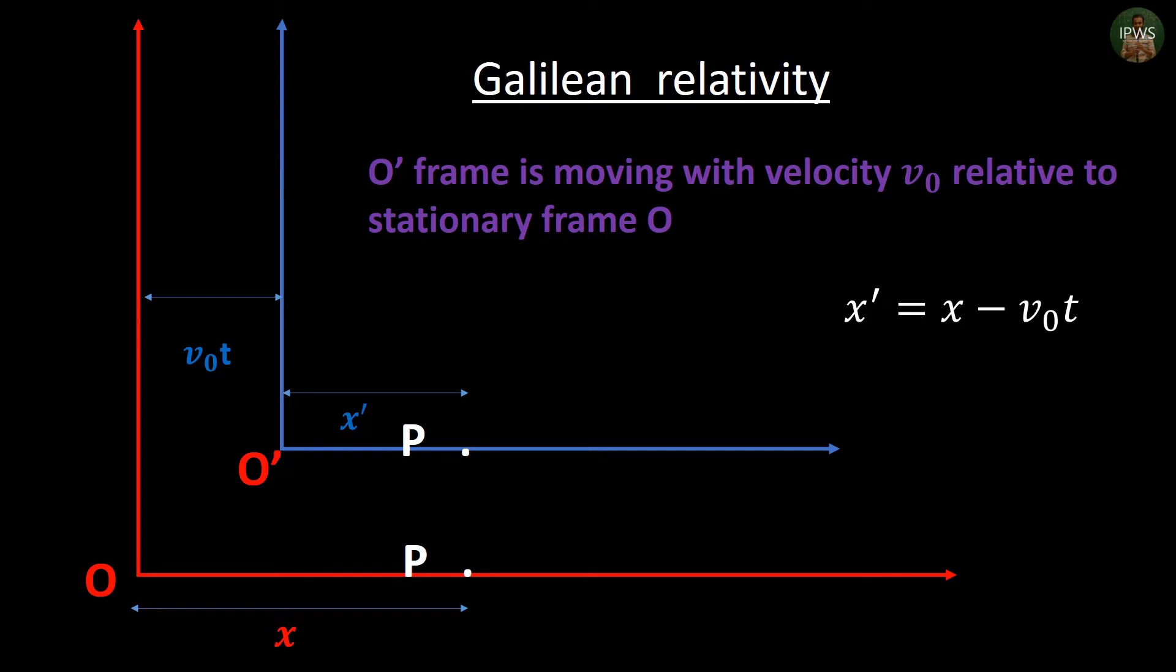We can generalize the direction of the movement and take the vi-th component as responsible for the change in xi-th component, giving xi' = xi - v0i t. And since time is a parameter in three-dimensional space, t' will be equal to t.